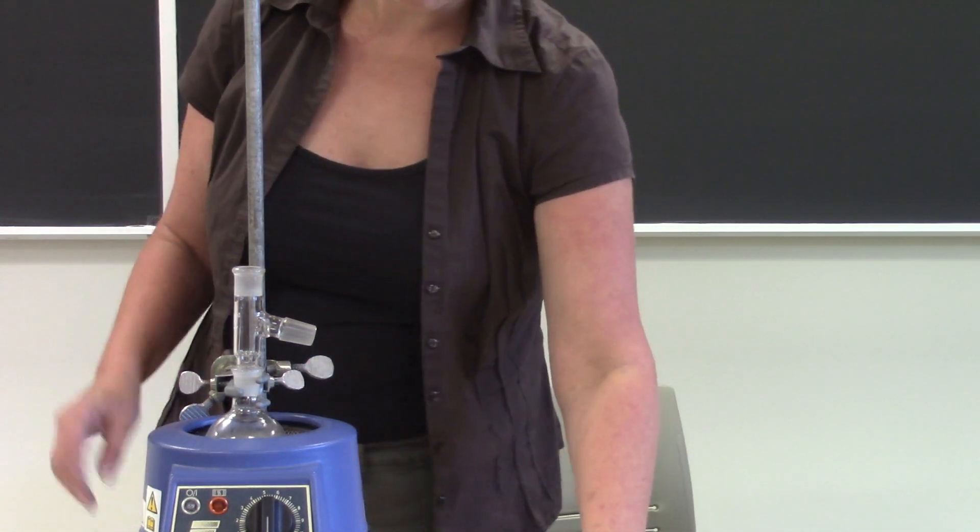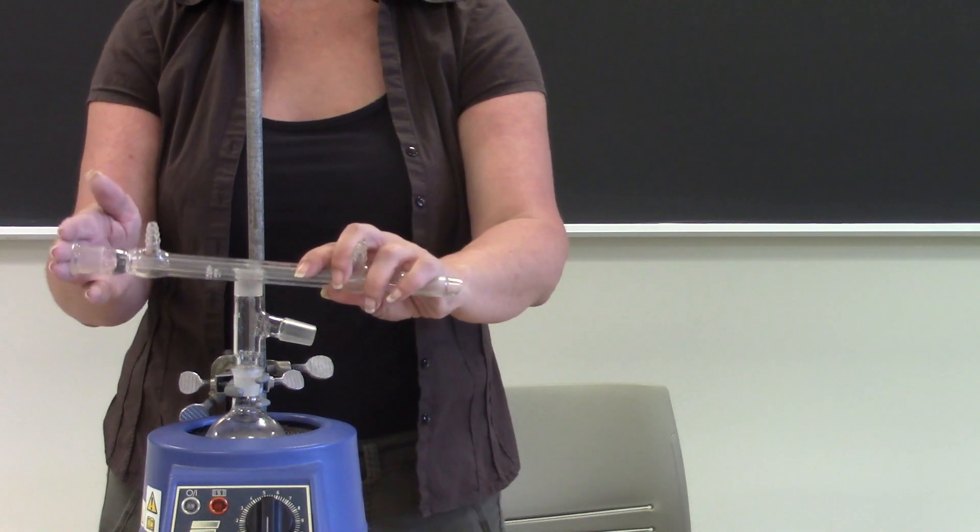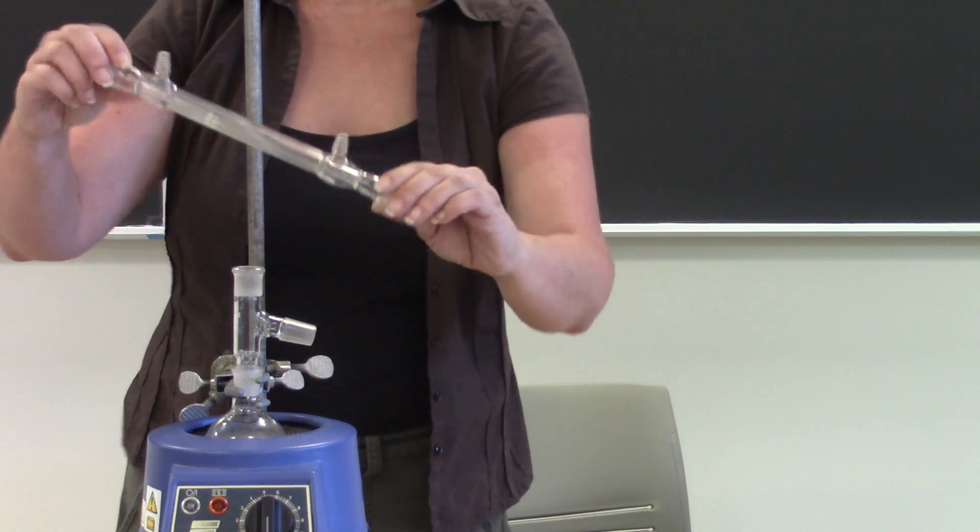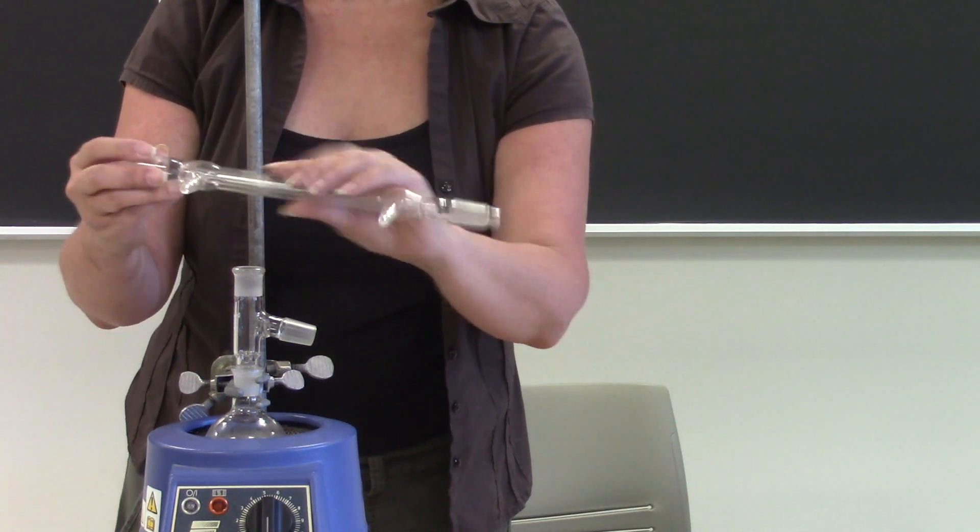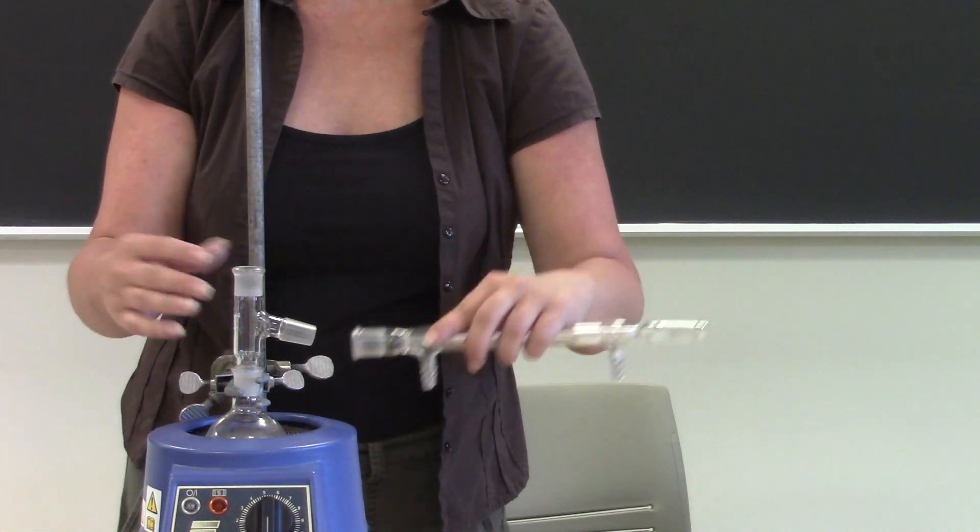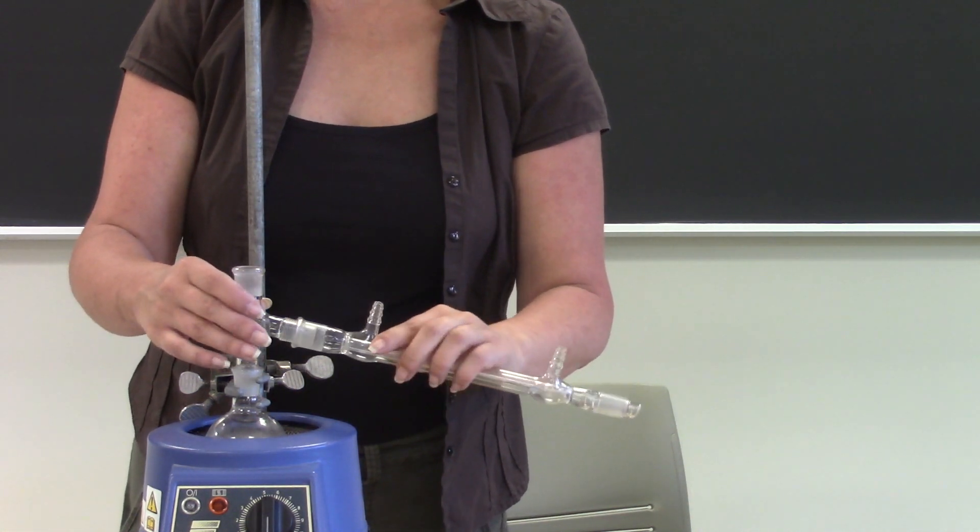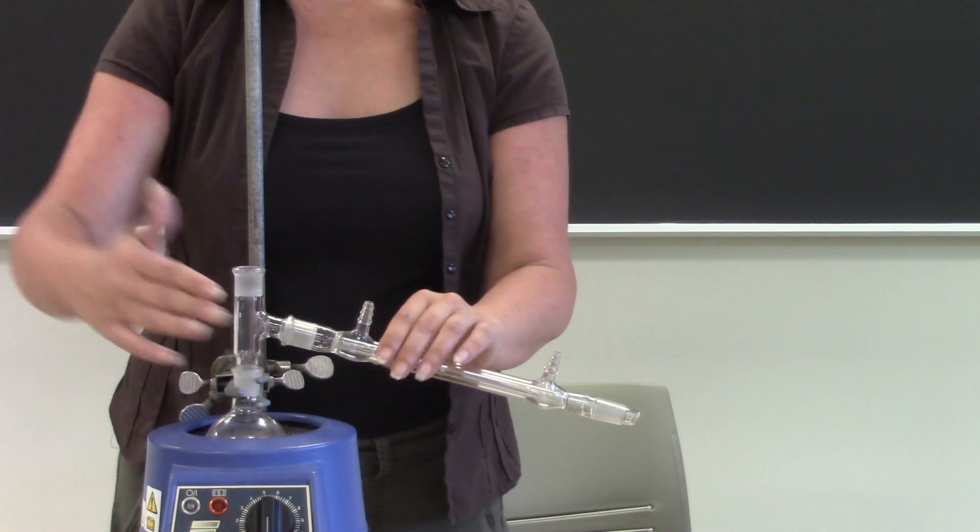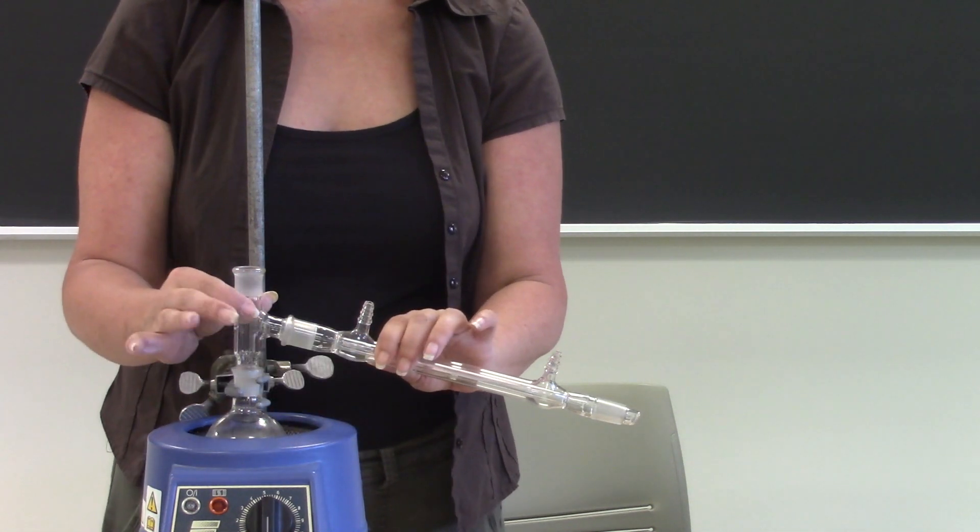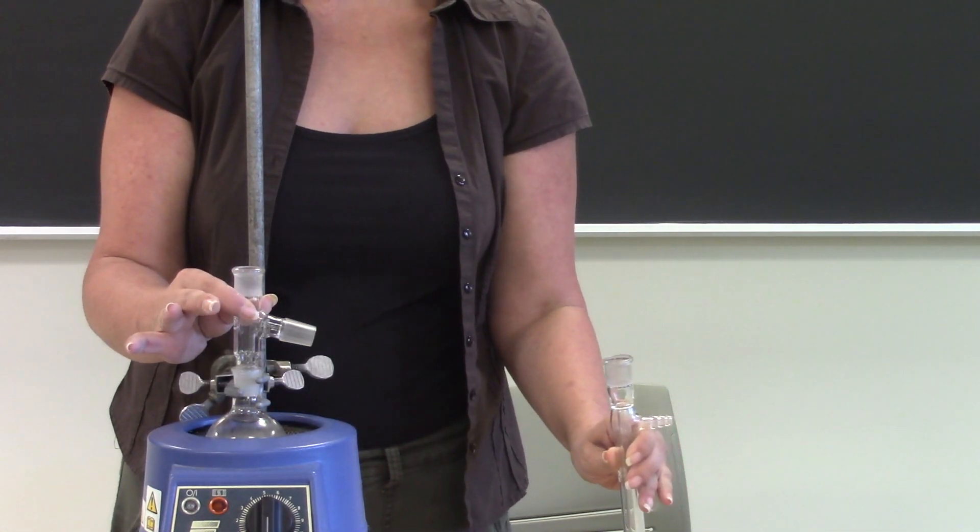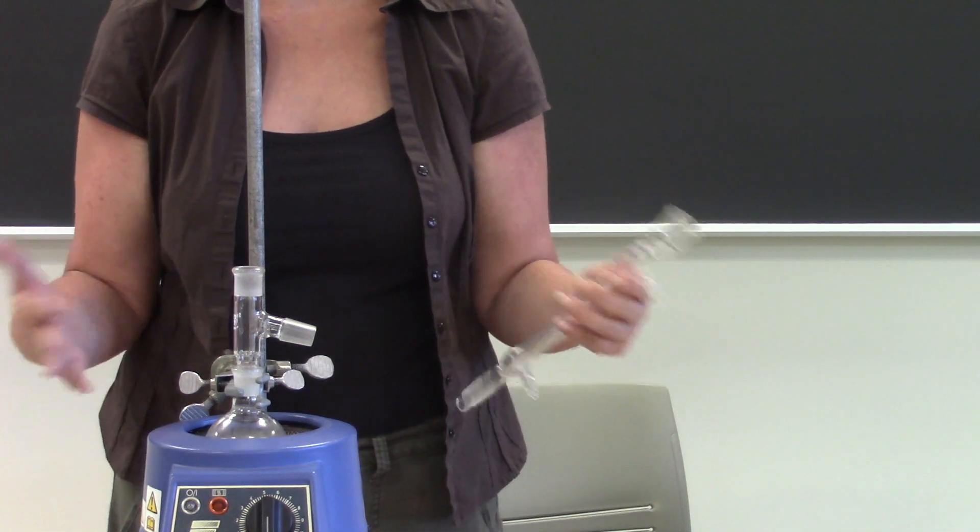The next thing that you are going to attach is your condenser, so this is where the vapor is going to be collected and condensed. So this goes on here but if you notice it's coming off at a downward angle which means during your distillation it could easily fall off and break and that's kind of a bad day in chemistry.